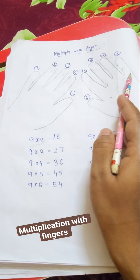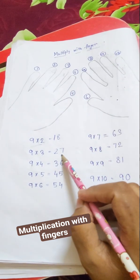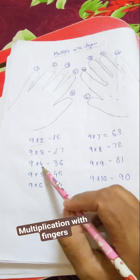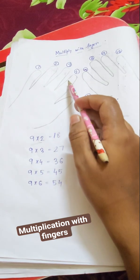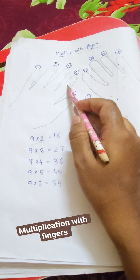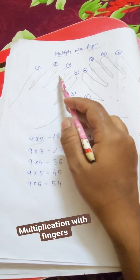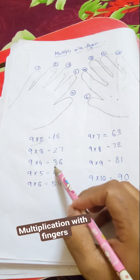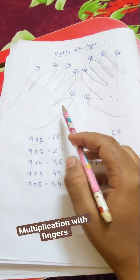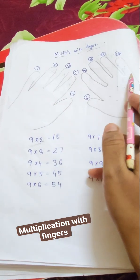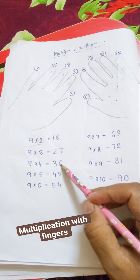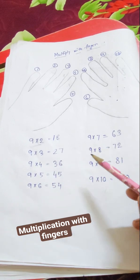Next, 9 times 4. I have crossed 4 here. What comes before 4? There are 3 fingers, so I have put 3 over here. And after 4 there is 1, 2, 3, 4, 5, 6. So I have written 6.